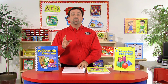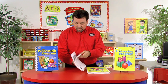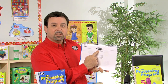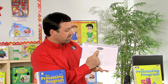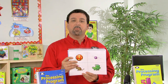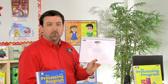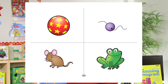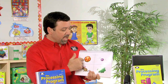There are also going to be 32 sublevels for Level 1. For example, sublevel 2 targets noun plus noun, with an example direction of "touch the bead and the frog." Once we've started with the example item, we work with the student on stimulus items listed 1 through 4 on the clinician side. The student looks at four different pictures and responds to prompts such as: touch the bead and the frog; touch the mouse and the ball; touch the frog and the mouse; touch the ball and the bead.